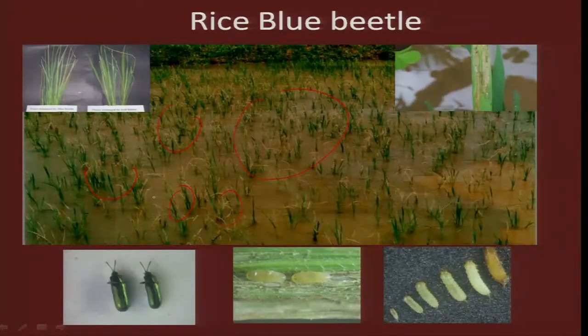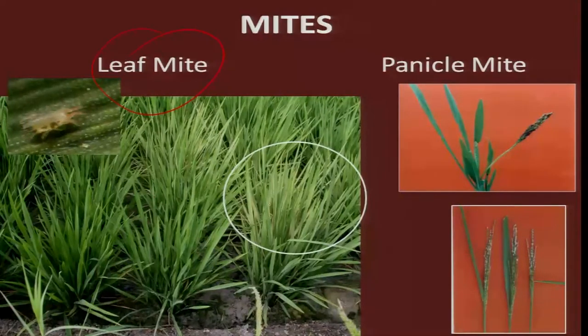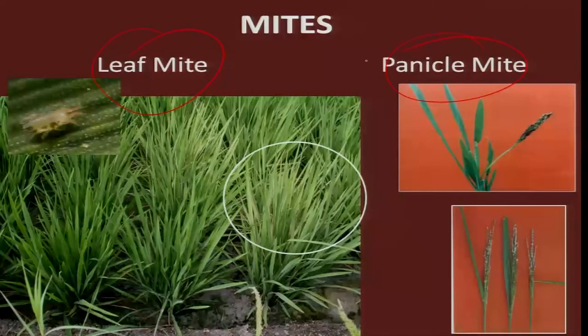Lastly, mites — a non-insect pest — of late, because of high nitrogenous application, are becoming very serious. Their attack in the early stage as leaf mites reduces growth with no panicle formation, and the whole plant looks grassy. Even in the late panicle formation stage they attack, resulting in very poor ear heads and chaffiness. These are the economically important insect pests across the country. In the next class, we will try to understand the IPM package recommended.